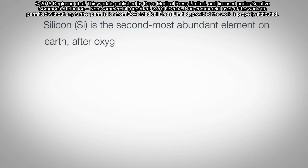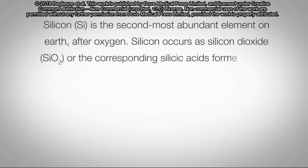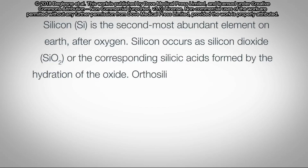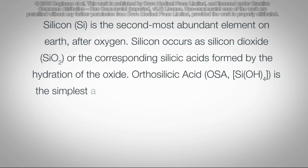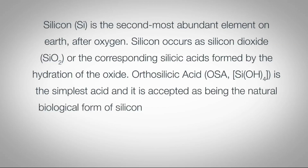Silicon is the second most abundant element on Earth, after oxygen. Silicon oxidizes to silicon dioxide, over the corresponding silicon acids formed by the hydration of the oxide. Orthosilicic acid, OSA, is the simplest acid and it is accepted as being the natural biological form of silicon in humans.